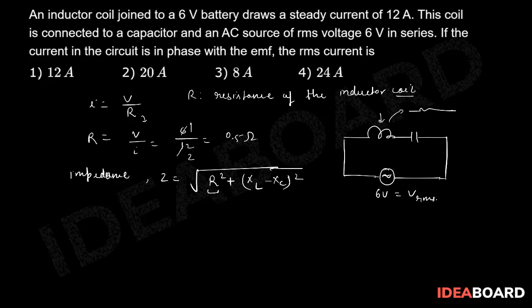Because this coil consists of this resistance R which is 0.5 ohm. And one more important information they are giving: that current is in phase with the EMF. What does it mean? Suppose if you have a phasor diagram, then if XC is more, then current will be in this direction. Because XC is more, current will be in this direction. If XL is more, let's say this is XC, this is XL, and this is R.